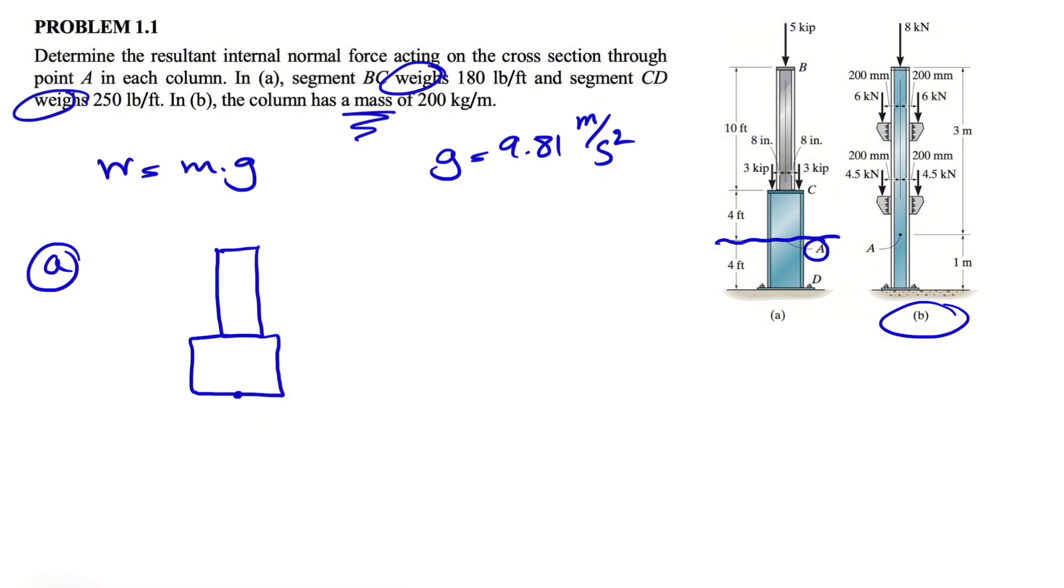The forces that we have: we have five kips on top, we have three kips on each side of member BC, and we obviously have the weight of each of them.